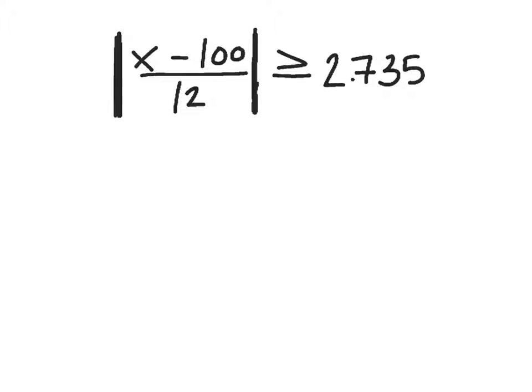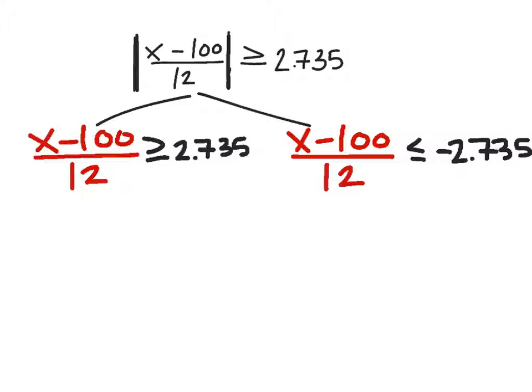The first thing I'm going to need to do is split this into two separate inequalities. We have to remember in absolute values, when I keep what we're comparing with, the 2.735, positive, the inequality will stay the same. On the other hand, if I make that negative, then I need to flip that inequality like this.